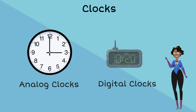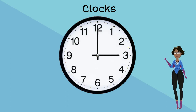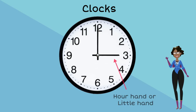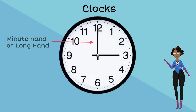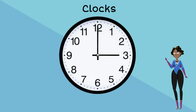Let's talk about analogue clocks for a while. Analogue clocks have 12 numbers on them which represent the hours of the day, and there are dashes in between those numbers that represent how many minutes are in an hour. The short hand points to the hour and is called the little hand. The long hand points to the minutes and is called the long hand or the big hand. By using both hands we can tell the time.